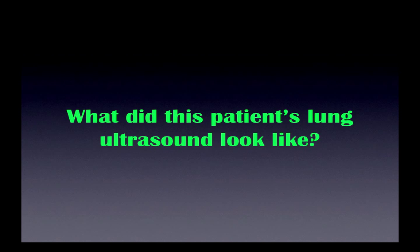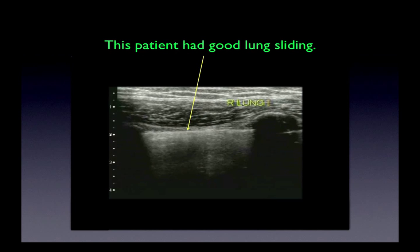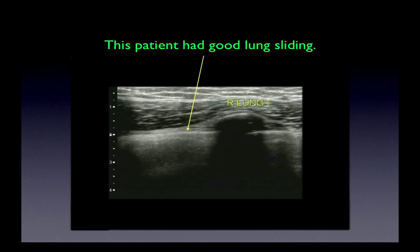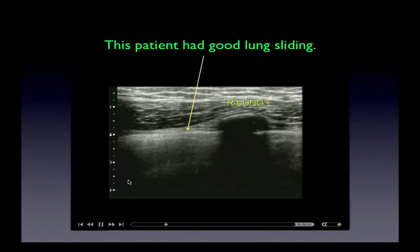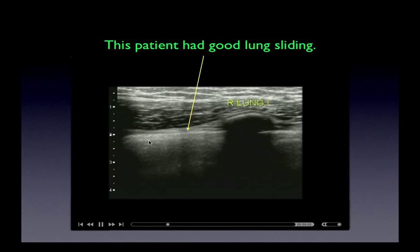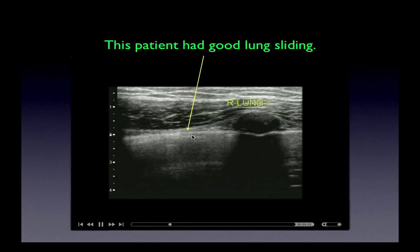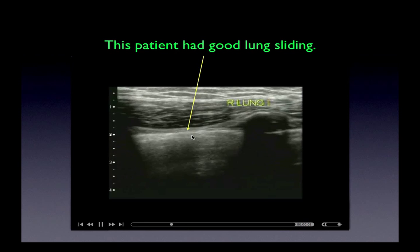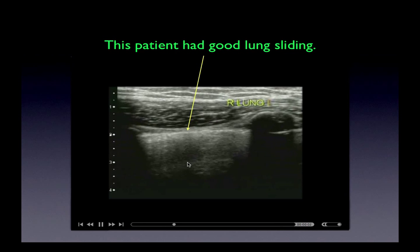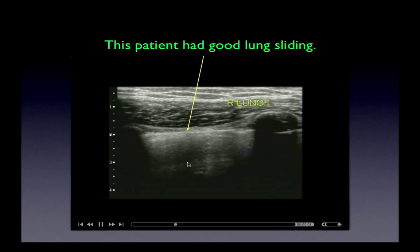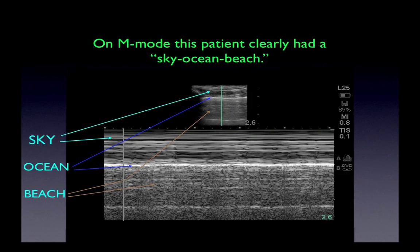So what did this patient's lung look like? The slide shown previously was actually his lung. There is good lung sliding, and there are comet tail artifacts coming down, seen in all interspaces. On M-mode, this was his M-mode — and clearly he has a beach appearance in the sky-ocean-beach. This is not consistent with pneumothorax.